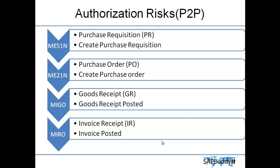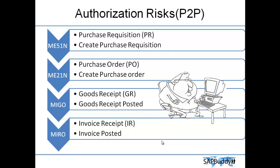Now let's assume all these authorizations are with one user and that user wants to commit fraud. If the user also has authorization for XK01 — which is for creating a bank account — they can create a fraudulent bank account, then create a purchase requisition.